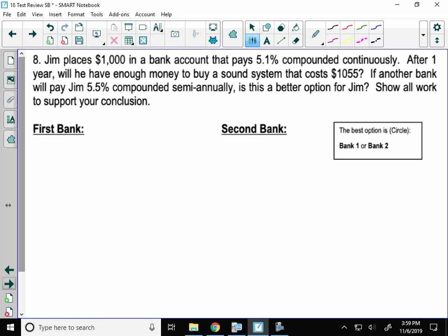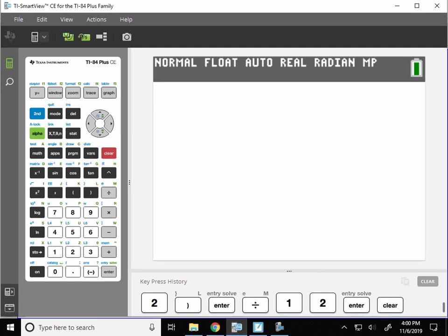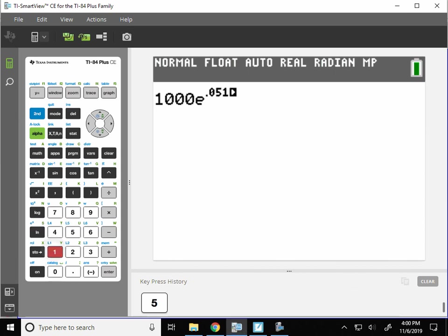So let's choose bank one. Bank one, we have an account that pays interest compounded continuously. That is your PERT formula. So we're going to put what information we know. So we know that Jim has $1,000. E is not a variable, it's a number, so I leave E. The interest rate is 5.1, so that R is going to be .051. And the time is one year, so just times one. Let's figure out how much money Jim will have in that amount of time. So 1,000 E to the .051 times one.